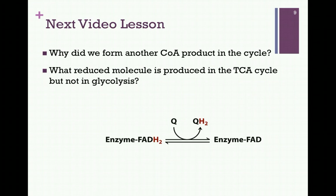In our next video lesson, we'll consider steps 5 through 8 of the citric acid cycle and see why we attached the succinyl group to coenzyme A in step 4. We will also see a reduced molecule produced in the citric acid cycle that we did not see in glycolysis.